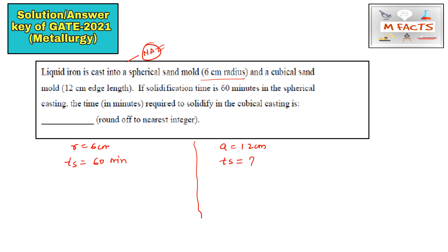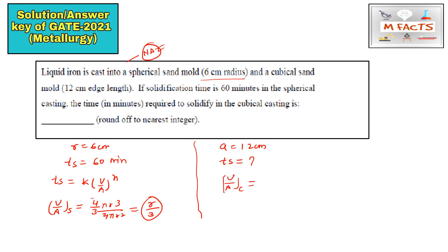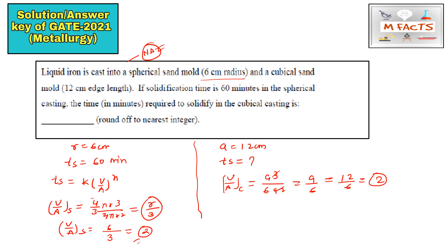They are asking for the solidification time of the cubical casting. Using Chvorinov's rule: t_s = k × (V/A)^n, where V/A is the casting modulus. For a sphere, V/A = (4/3 π r³)/(4π r²) = r/3 = 6/3 = 2. For the cube, V/A = a³/(6a²) = a/6 = 12/6 = 2. Since k and n are constant and V/A is also 2 for both, the time will also be constant — same for both.